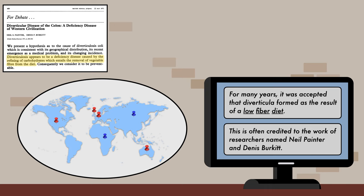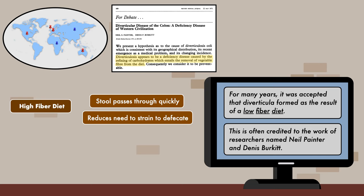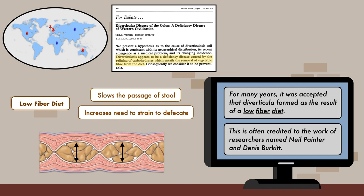Meanwhile, in places like Africa and other developing nations in Asia, the diet remained high in fiber and the prevalence of diverticula remained low. The suggested mechanism was that a high-fiber diet allows stool to pass through the large intestine more swiftly and reduces the need to strain to defecate. Conversely, a low-fiber diet slows the passage of stool, hardens it, and increases the need to strain. The high-pressure environment from straining increases pressure on the lining of the large intestine and compromises its integrity.